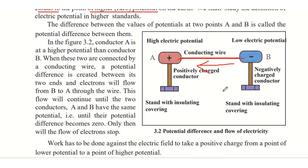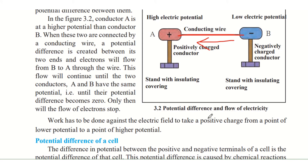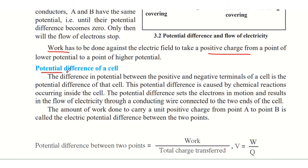Work has to be done against the electric field to take a positive charge from a point of lower potential to a point of higher potential, since the natural flow of a positive charge is from higher to lower potential. The difference in potential between the positive and negative terminals of a cell is the potential difference of that cell, which is caused by chemical reactions occurring inside the cell.